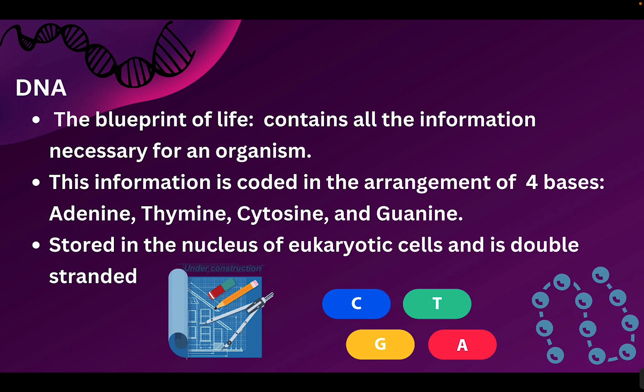The first one is DNA. This is your blueprint. It contains all the information that a single organism needs to live, to function, to survive. The information is found on the inside of DNA in what's called the nitrogenous bases. We have four of them: adenine, thymine, cytosine, and guanine. These four bases are found in all DNA across all living organisms, which is why it's called the universal code.